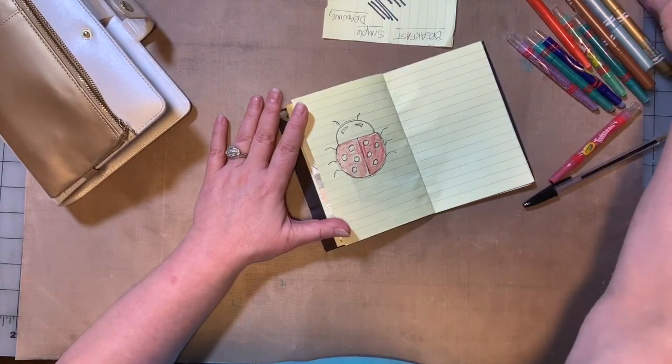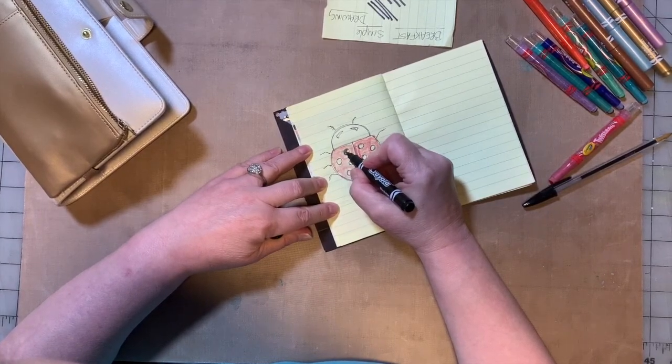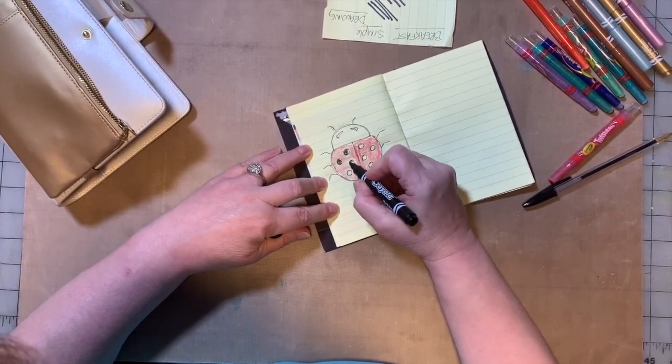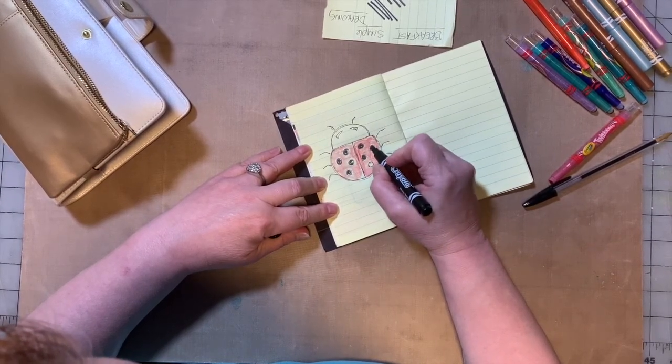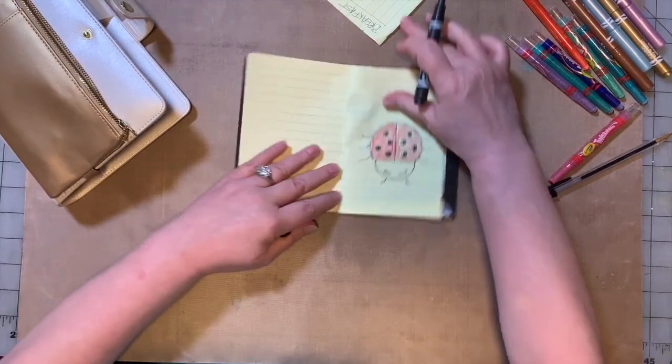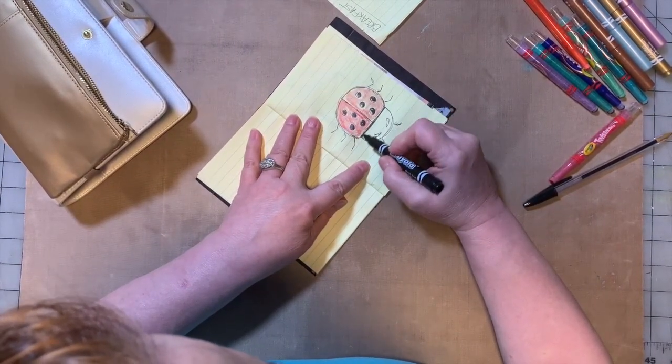And then we're going to take our black Crayola marker and we're going to make her spots black. And turn it this way, it'll be easier for me to color. I'm going to make her head black.